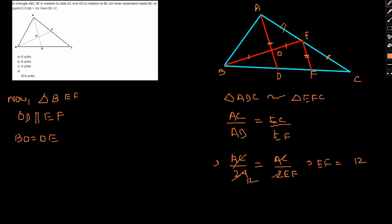So now focus on triangle BOD and triangle BEF. Both these are similar. Therefore we can write BD by BO will be equal to BF by BE.